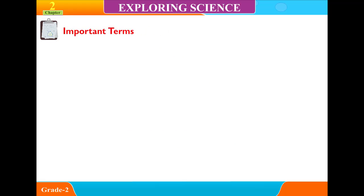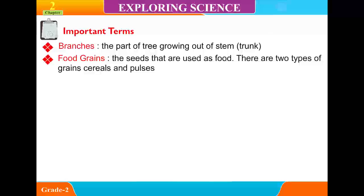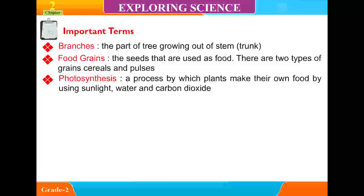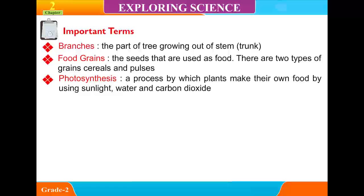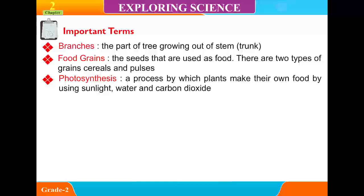Important Terms. Branches: the part of a tree growing out of the stem. Trunk. Grain: the seeds that are used as food. There are two types of grains — cereals and pulses. Photosynthesis: a process by which plants make their own food by using sunlight, water and carbon dioxide.